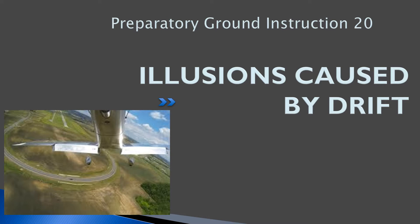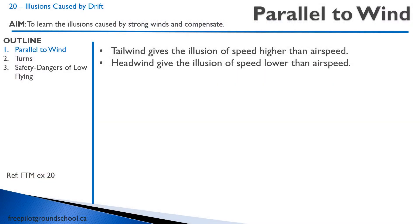I'm going to talk about some different things that can occur with low flying. You end up with some illusions when you have a strong wind. If you're flying with a tailwind, it will give an illusion that your speed is higher than it is. And a headwind makes it look like you're going slower than you actually are.